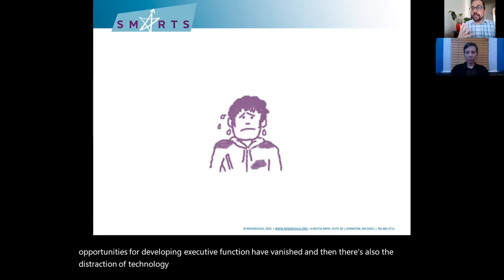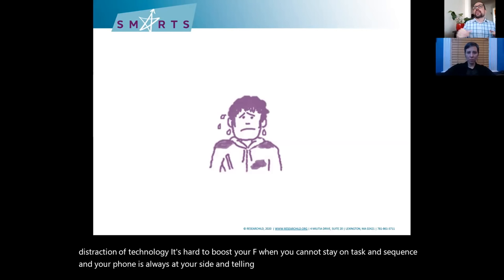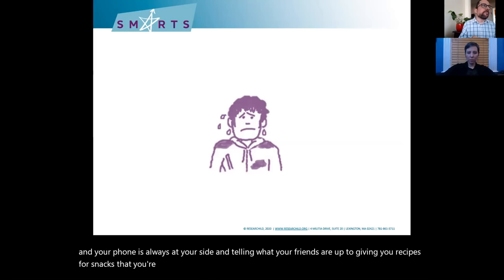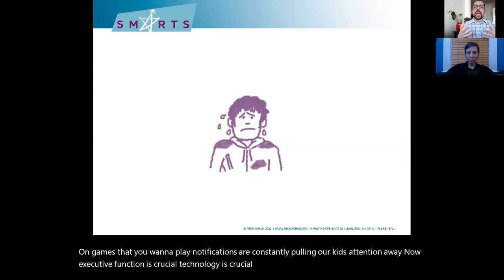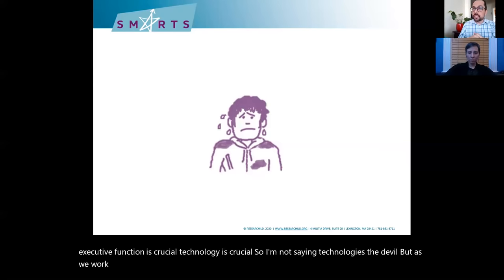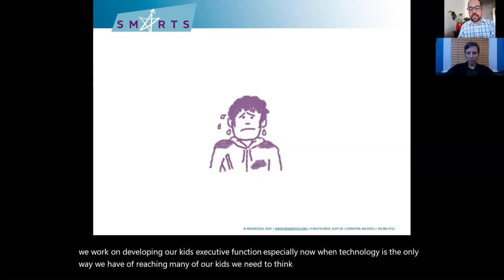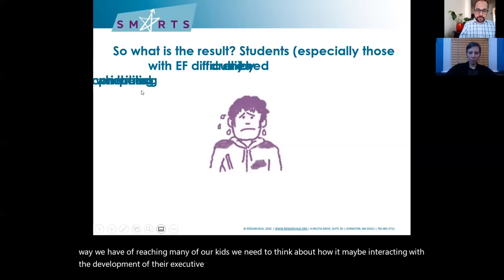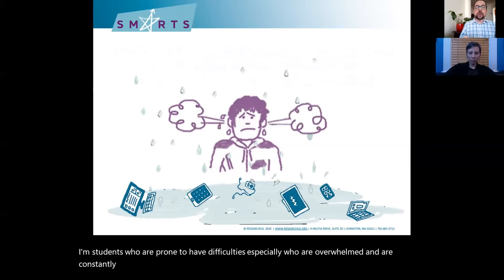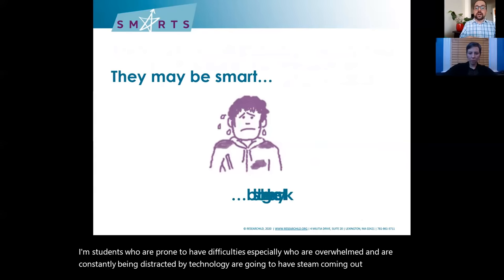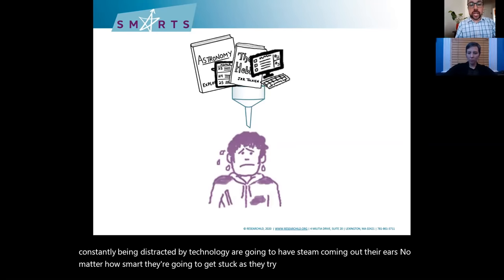There's also the distraction of technology. It's hard to boost your EF when you cannot stay on task — your phone is always at your side telling you what your friends are up to, giving you recipes for snacks you'll never make, games you want to play. Notifications constantly pull our kids' attention away. Technology is crucial, but as we work on developing our kids' executive function — especially now when technology is the only way we have of reaching many of them — we need to think about how it may be interacting with the development of their executive function.